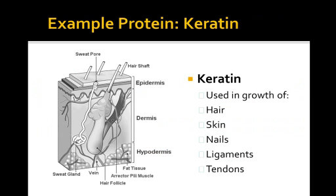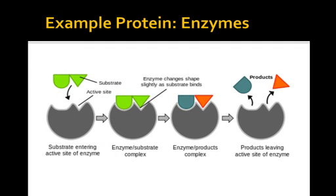Keratin is a protein our bodies build to make hair, skin, nails, and related structures. Without keratin we'd have some pretty bad-looking hair, skin, and nails. Proteins are all about keeping our body connected so we don't fall apart.